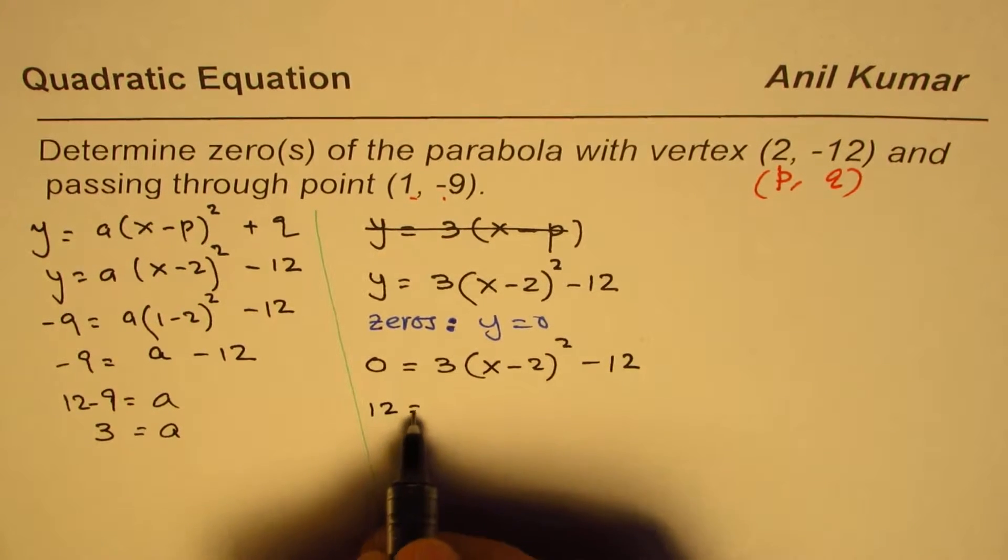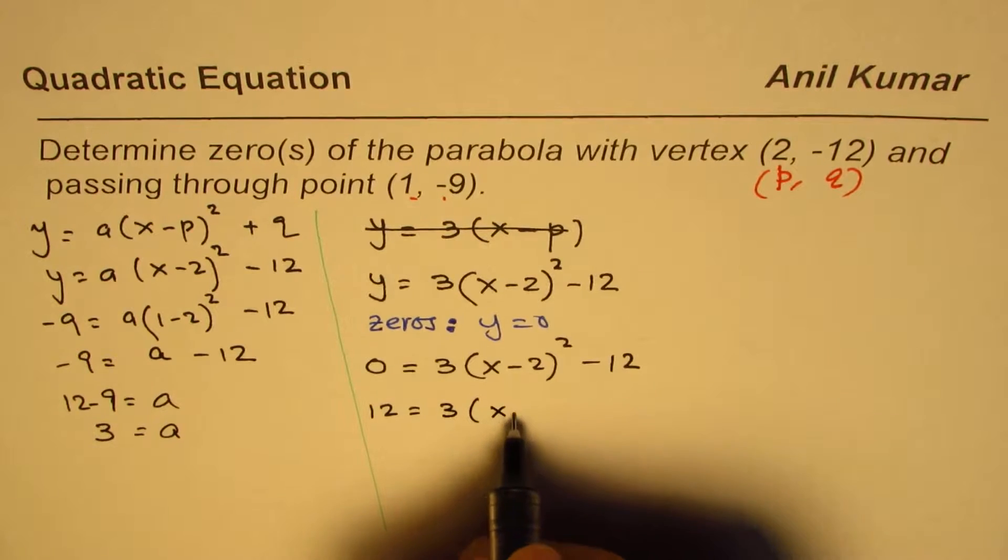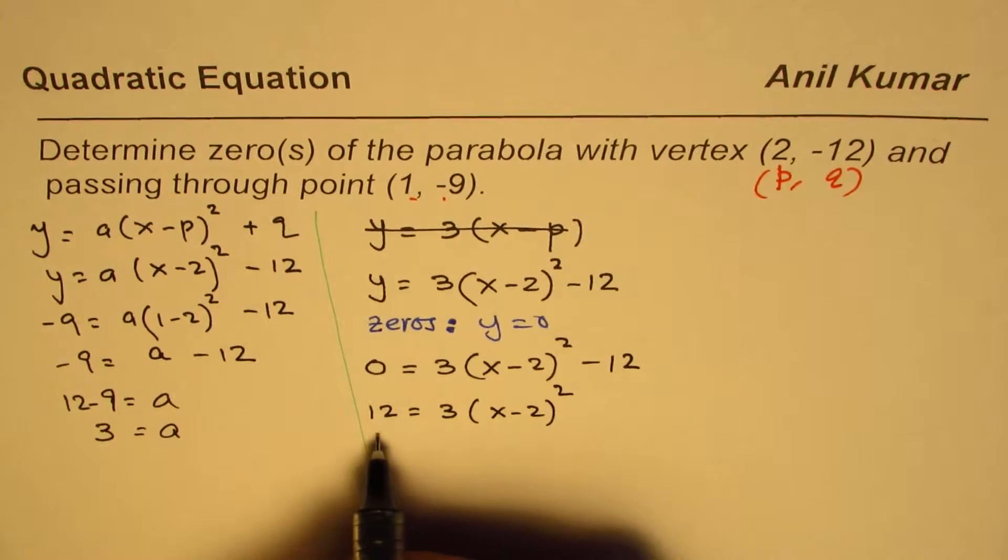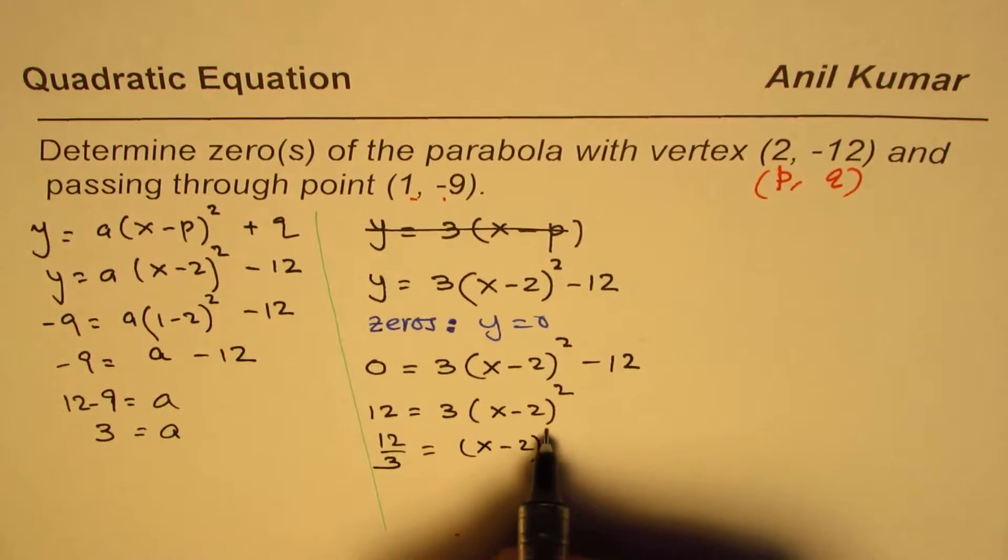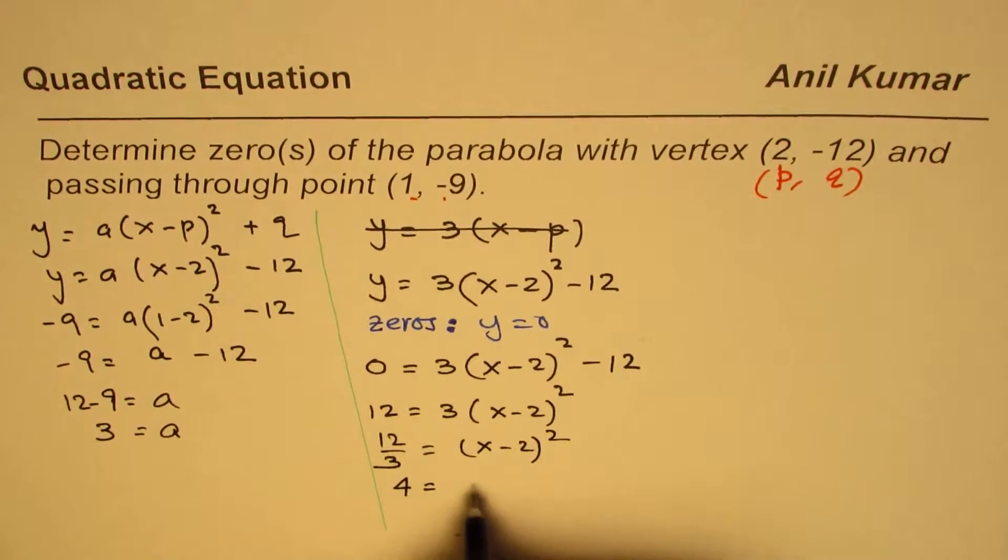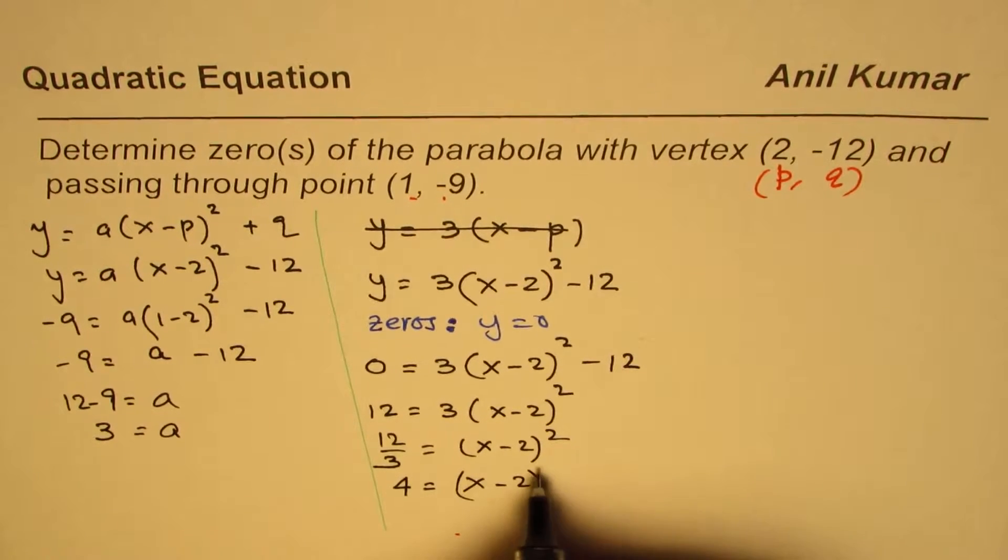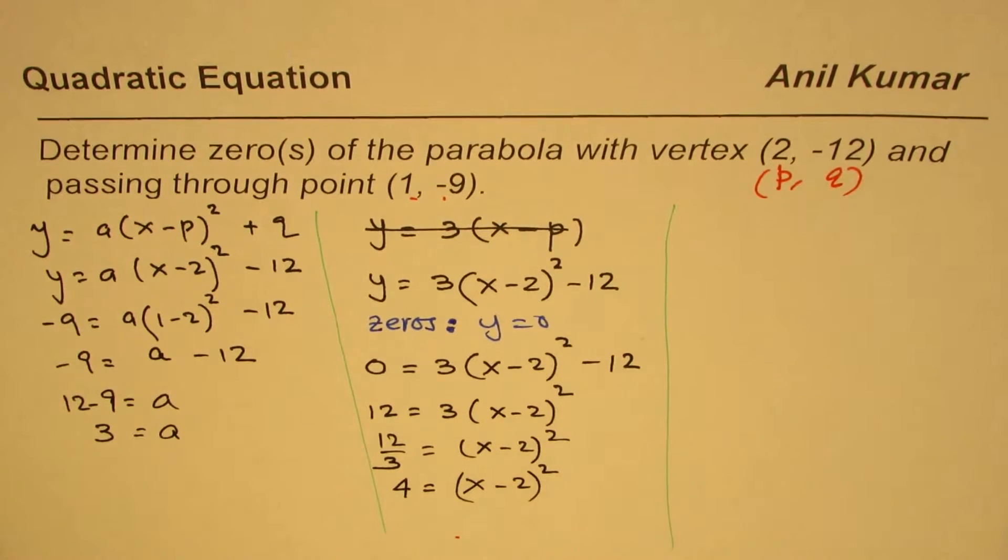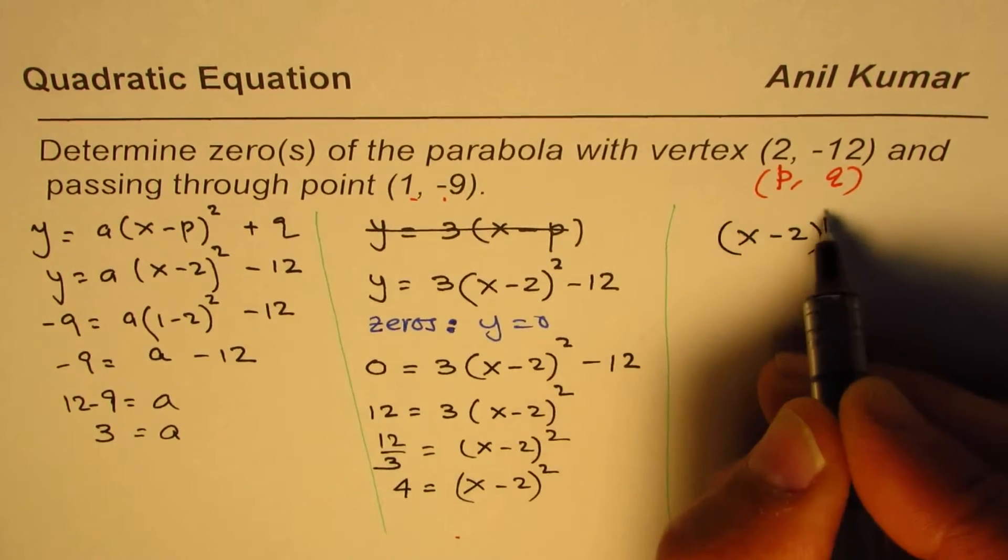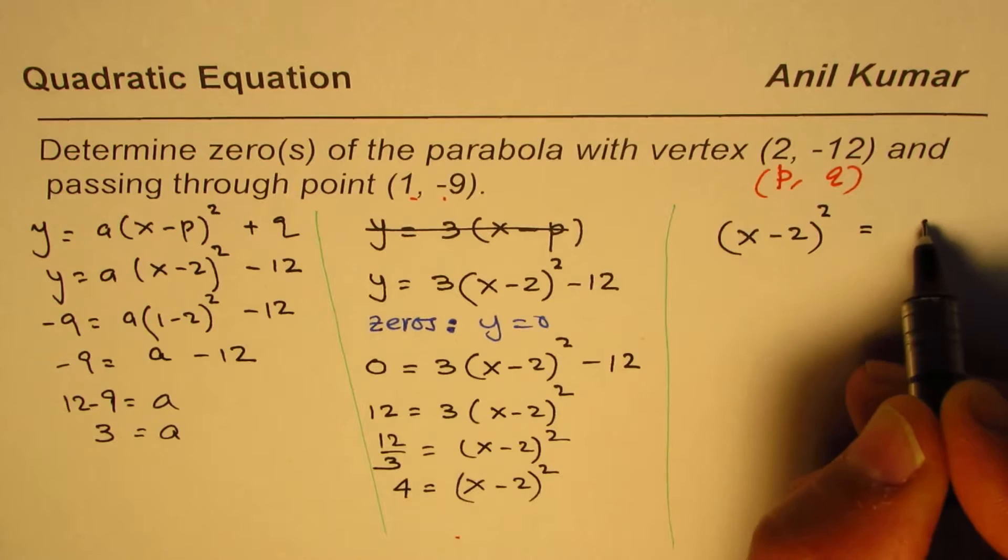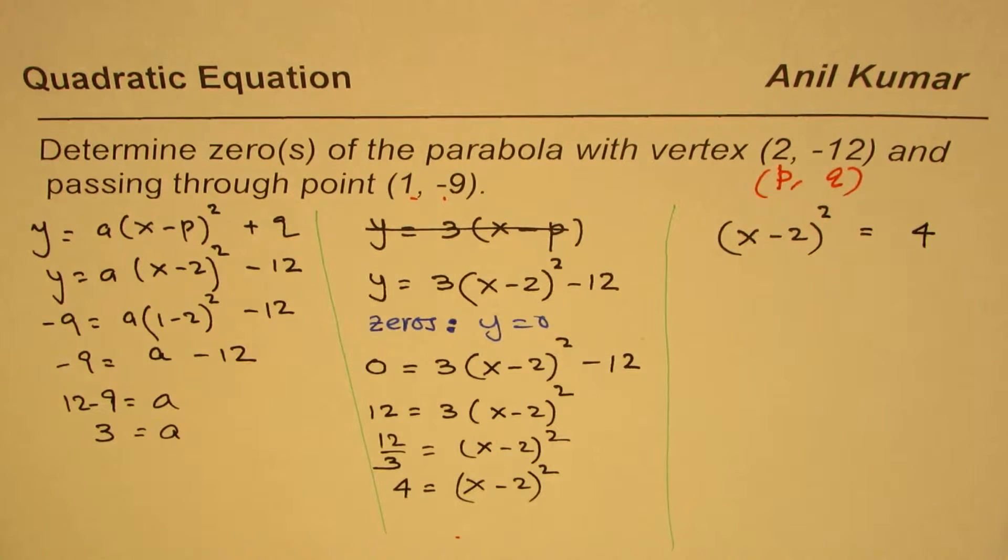So we have 12 = 3(x - 2)². 12 divided by 3 gives us (x - 2)² = 4. Let me rewrite this equation as (x - 2)² = 4.